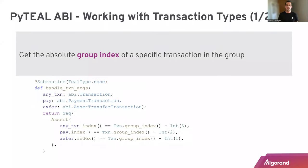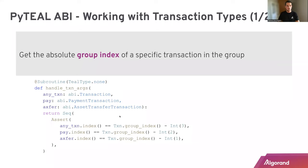So imagine here we can access the group index of a transaction group. In this example we have an atomic group of four transactions, in which the first transaction is a genesis transaction, the second is a payment transaction, the third is an asset transfer, and the fourth is the application call to that specific method. By accessing the group_index of each transaction, we can inspect which order those transactions are in and here we are just checking that the order is exactly as I just described.